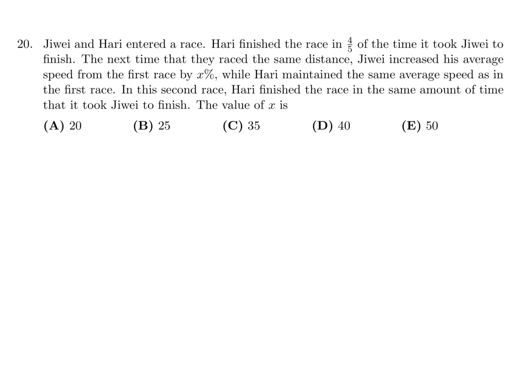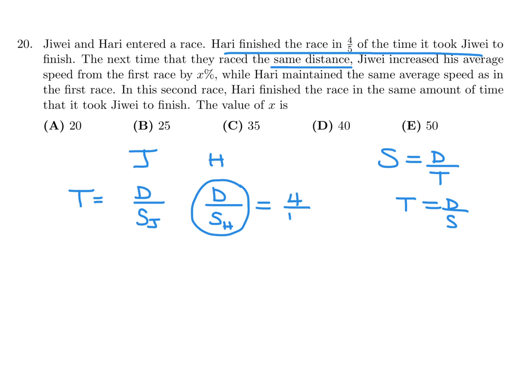Jiwei and Hari entered a race. Hari finished the race in 4 fifths of the time it took Jiwei to finish. The next time that they raced the same distance, Jiwei increased his average speed from the first race by X percent, while Hari maintained the same average speed as in the first race. In the second race, Hari finished the race in the same amount of time it took Jiwei to finish. The value of X is. So we have Jiwei and Hari. So initially, the time. Well, the distance, the formulas are speed equals distance over time, or time equals distance over speed. So the times are distance over speed. His distance over his speed, and the distances are the same, right? The same distance, so I can just put D for both of them, and the speed for Hari.